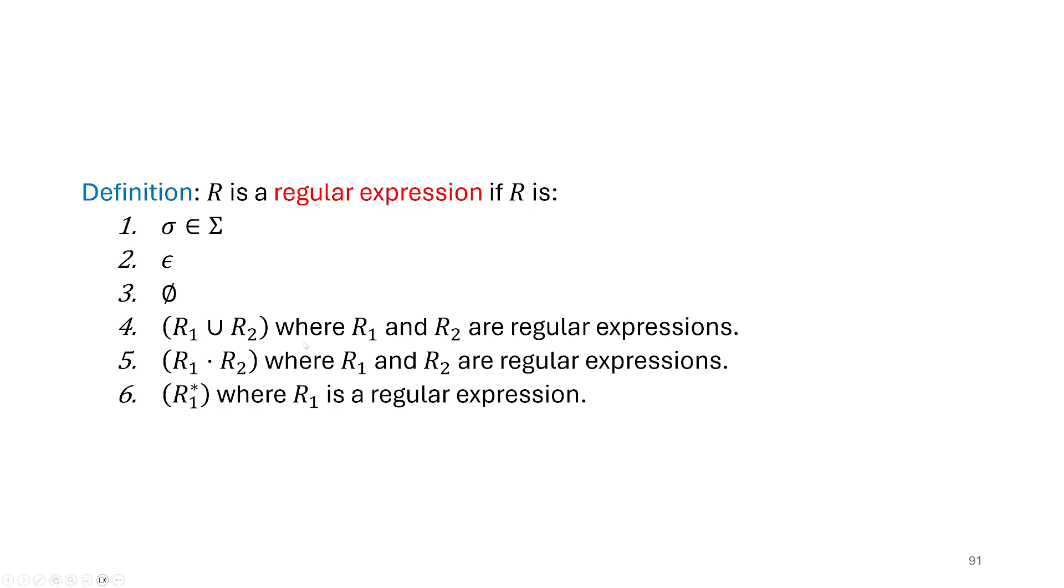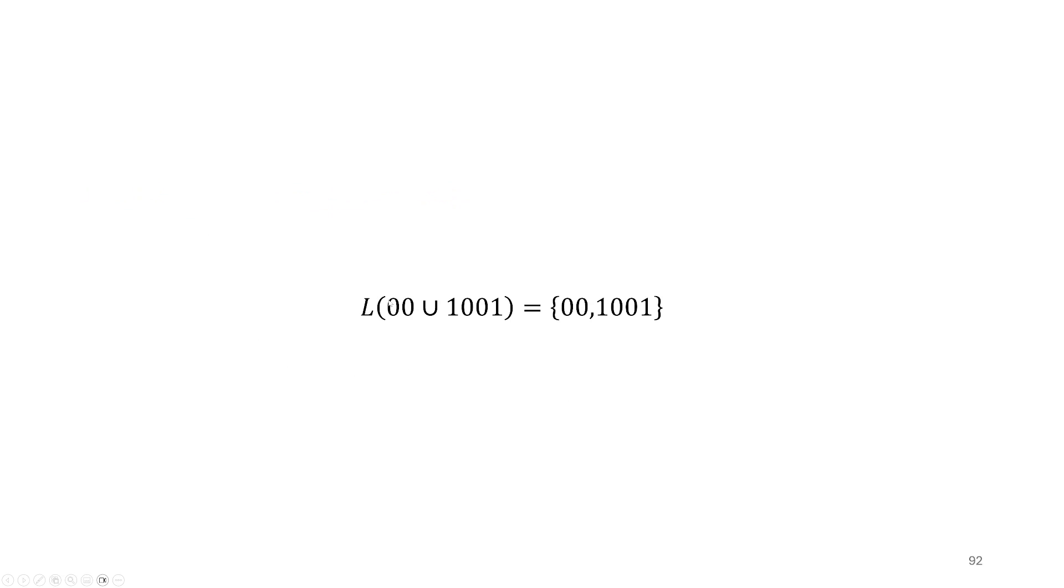And now maybe we can look at some regular expressions. So inside here, inside this language bracket here, I have a regular expression. We have 0, 0, 0. That's formed by concatenating the symbol 0 to itself. We also have this string here 1, 0, 0, 1 which is formed by again concatenating 1 to a 0 to a 0 to a 1.